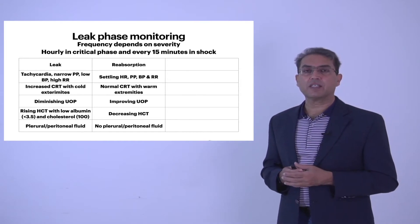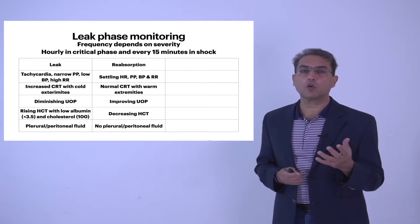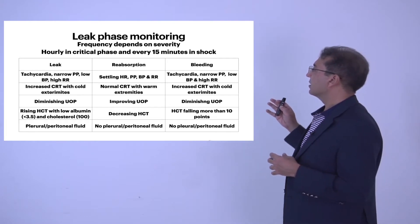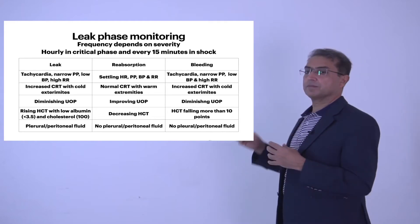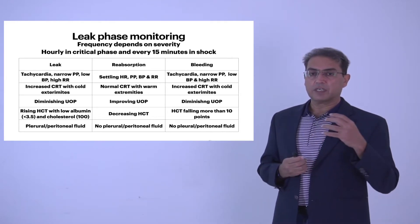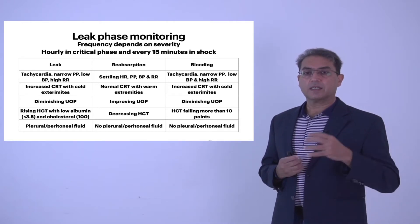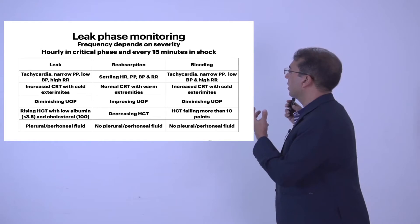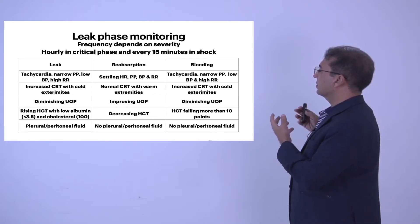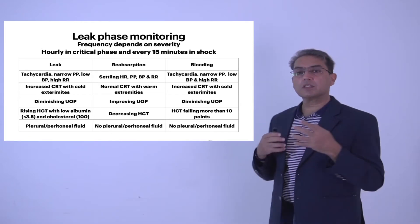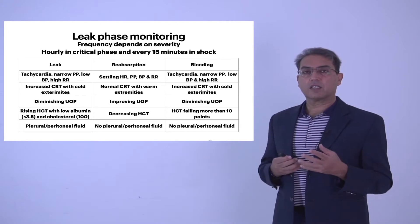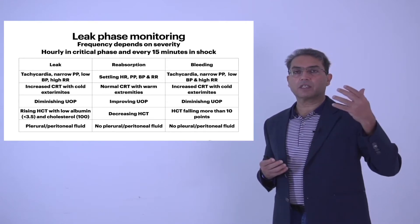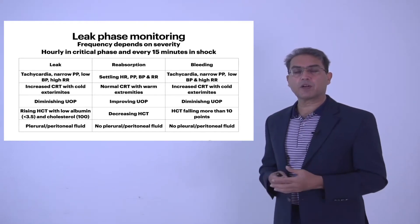A third problem in patients in the critical phase is internal bleeding, which may not be visible. Clinical monitoring tells us the patient has internal bleeding — there is tachycardia, hypotension, narrow pulse pressure, tachypnea, increased capillary refill time, cold extremities, and diminishing urine output. This is very similar to the leak phase. The key differentiator is the hematocrit: in the leak phase, the hematocrit rises, while in bleeding the hematocrit falls. That is why monitoring the hematocrit is very important — it gives very valuable information. If the patient has signs of low perfusion and the hematocrit is falling, the patient is bleeding. A drop of more than 10 points from baseline means the patient is bleeding.